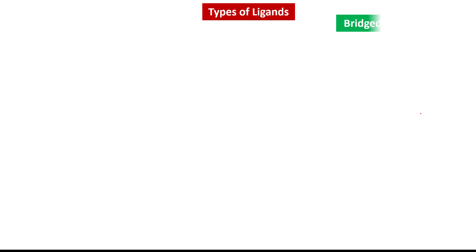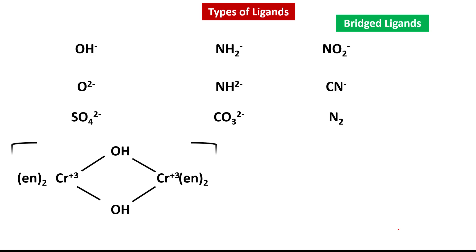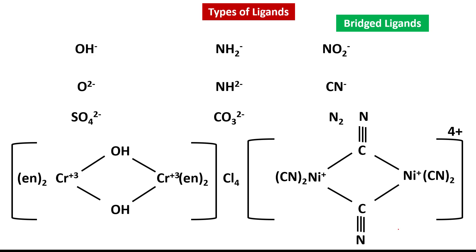The last type is bridge ligands. As the name says, they can act as a bridge between two metal atoms. Examples include hydroxo, oxo, sulfato, amido, imido, carbonato, nitro, cyano, and dinitrogen. For instance, a hydroxo group can form a bridge between two chromium atoms, and a cyano group can form a bridge between two nickel atoms. These are called bridge ligands.